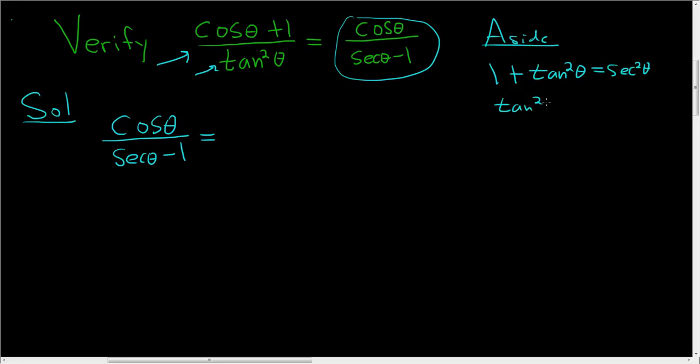So we know that tangent squared of theta is equal to secant squared of theta minus 1. And this is actually secant theta minus 1 times secant theta plus 1.